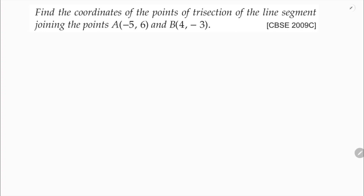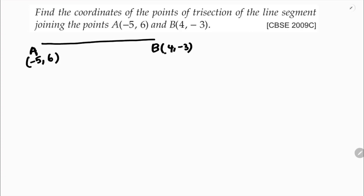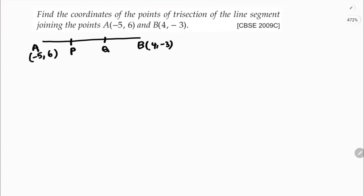Find the coordinates of the points of trisection of the line segment joining the points A(-5, 6) and B(4, -3). Trisection means the segment is divided into 3 equal parts, so AB is trisected at points P and Q. We need to find P and Q.